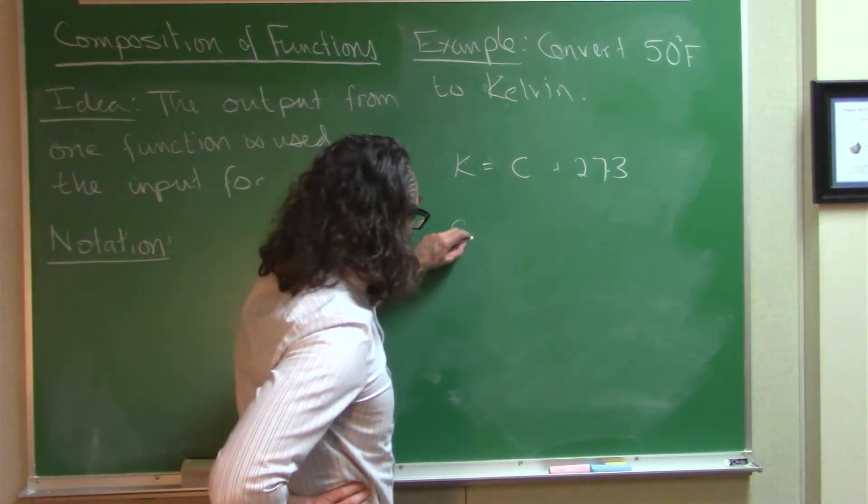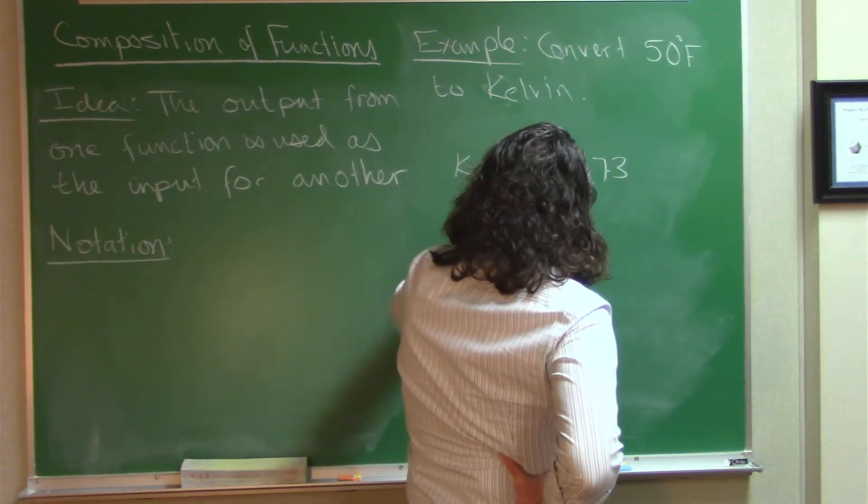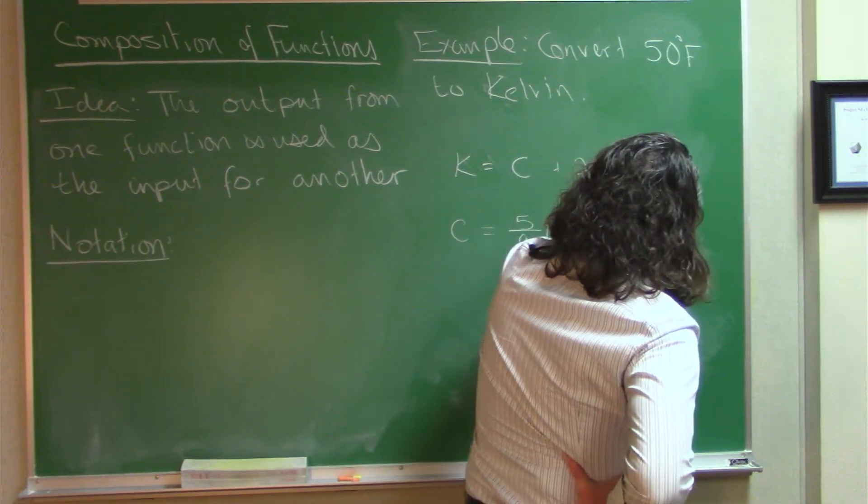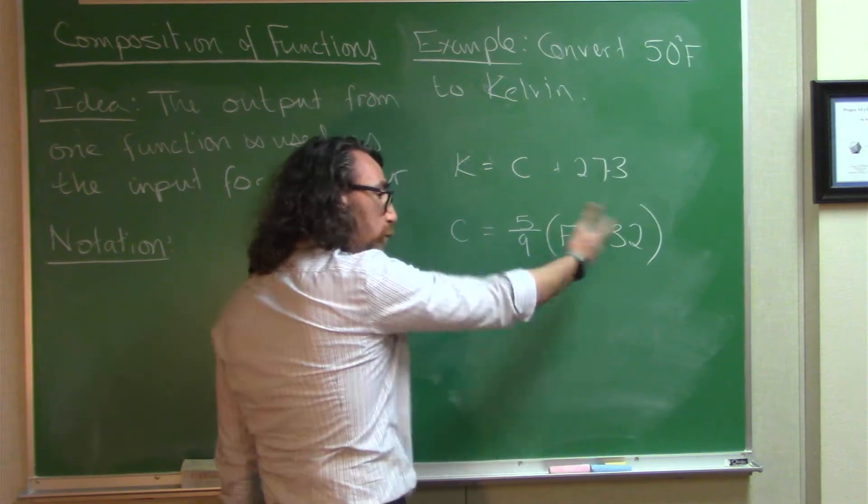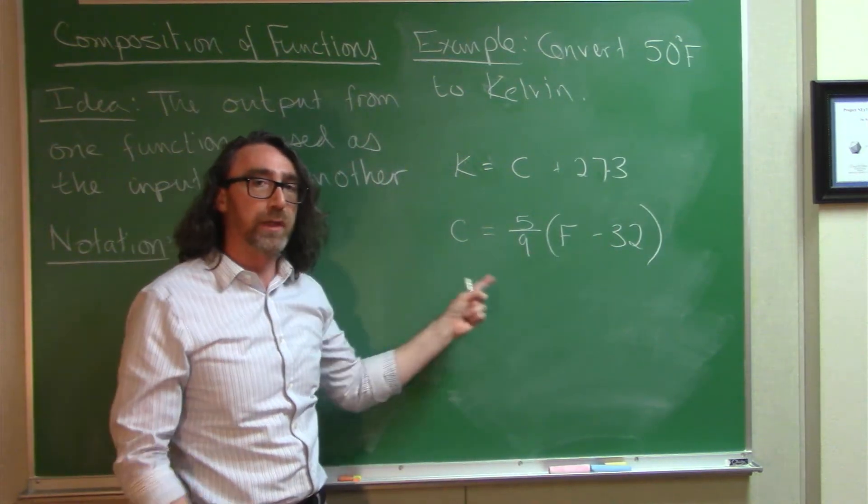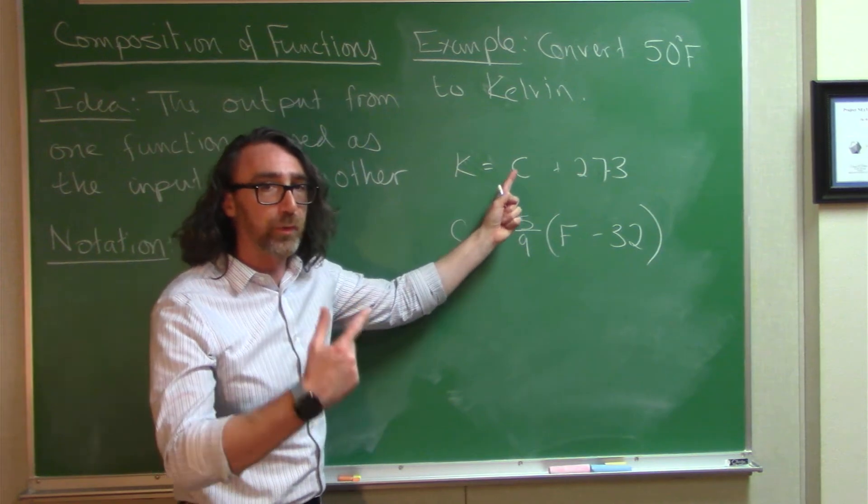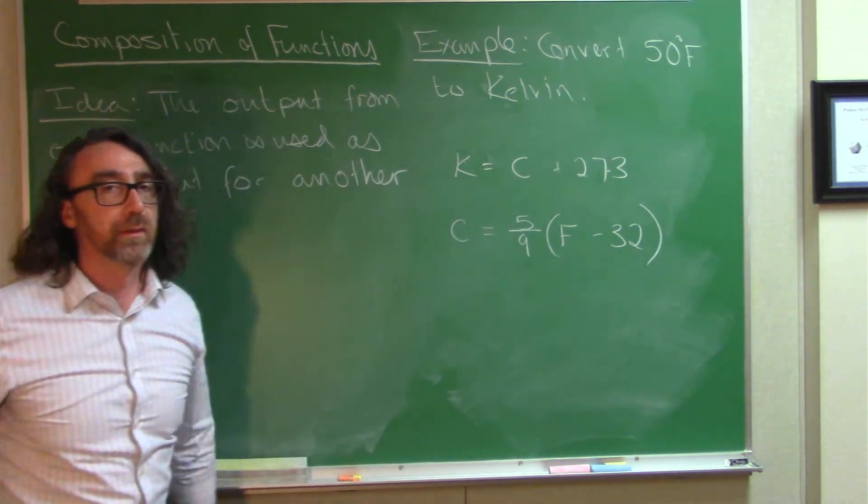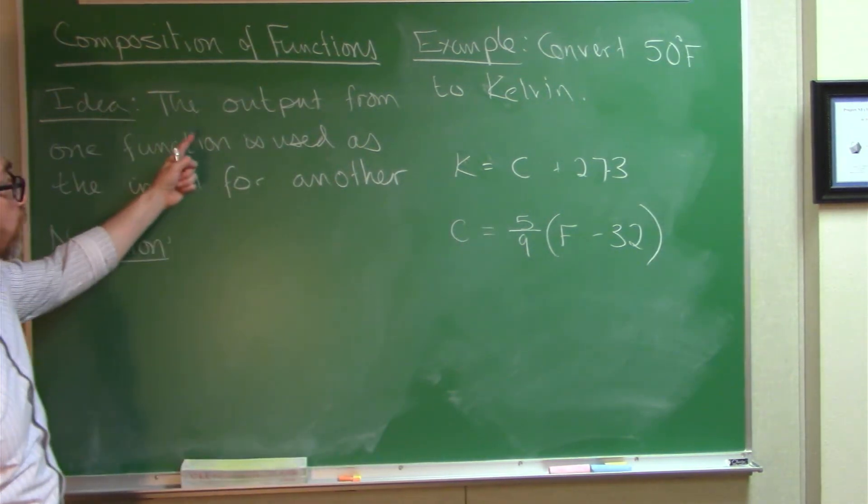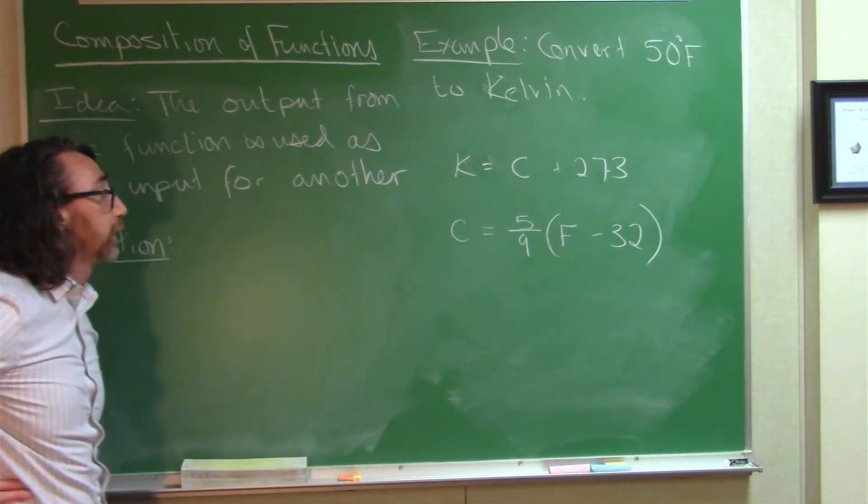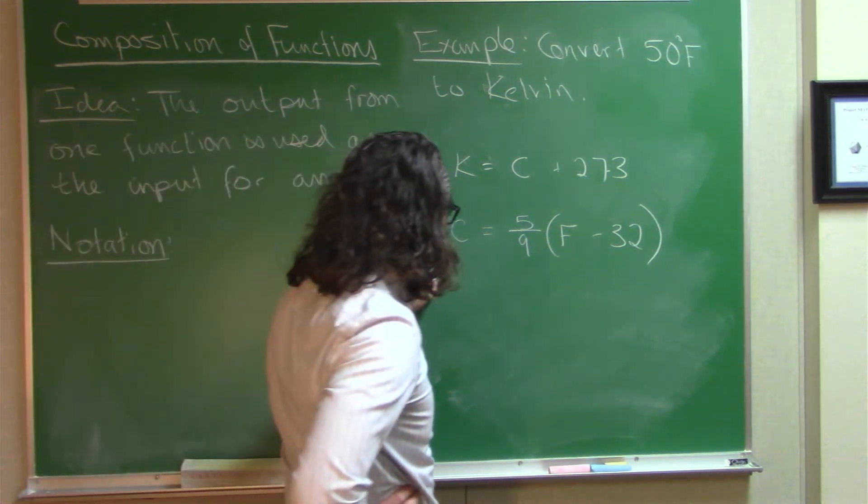Well, here's the function that converts Fahrenheit to Celsius. Okay, so this rule takes a Fahrenheit temperature and gives you a Celsius temperature. This rule takes a Celsius temperature and gives you a Kelvin temperature. In other words, we use the output from this function as the input to this one. Okay, so let's go ahead and actually finish off the problem.